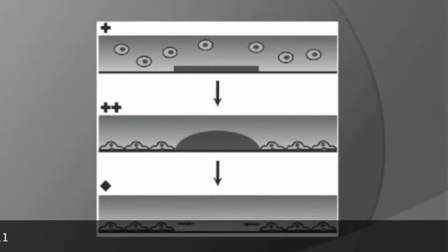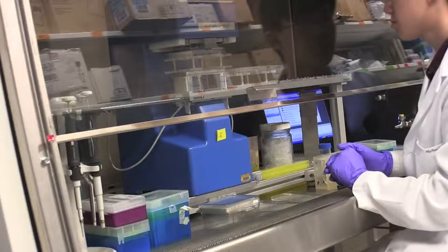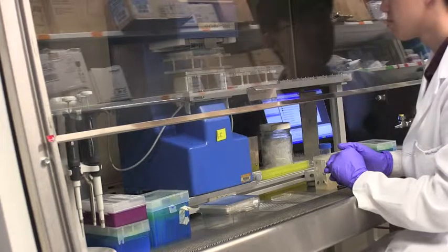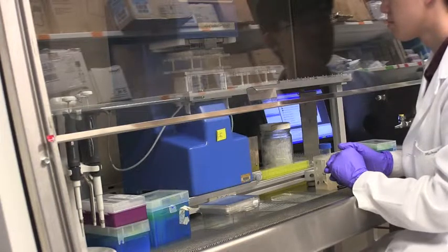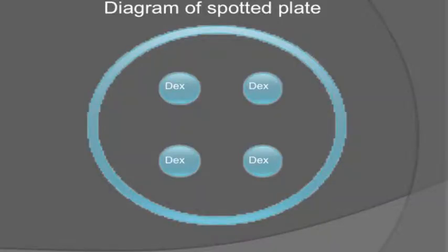We're now in the cell culture room, where a plate is being spotted with DEX. Using a SyBio program I created earlier this summer, four dextroplets, to be the wounds, are being spotted one at a time. The droplets are then allowed to dry. Shown in the diagram are four dextroplets in a single well.